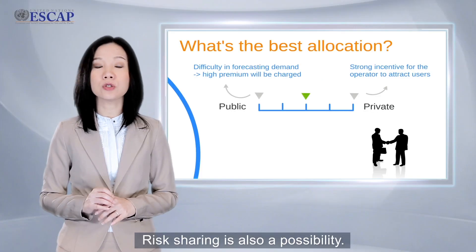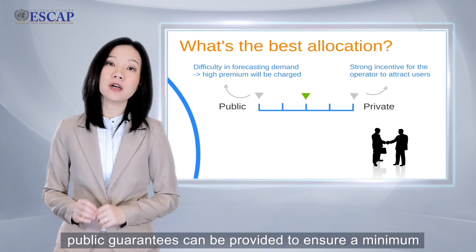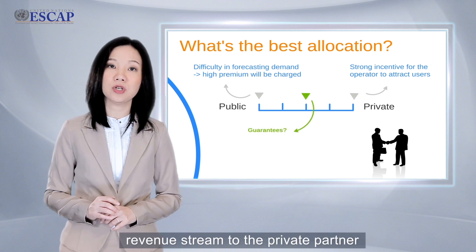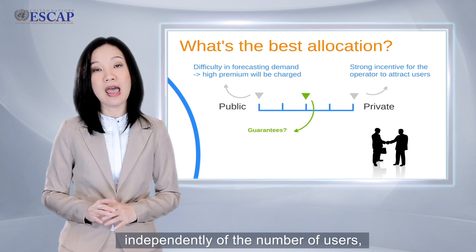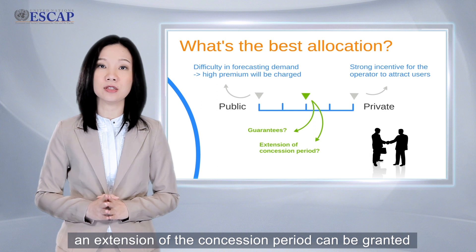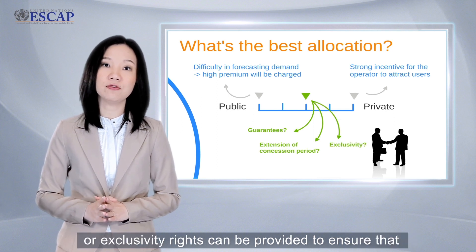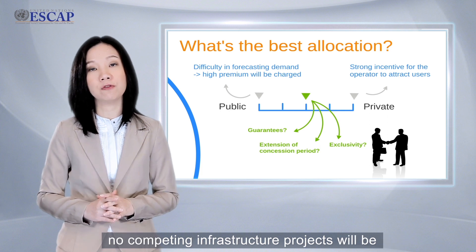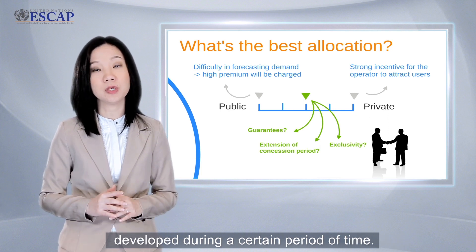Risk sharing is also a possibility. For example, public guarantees can be provided to ensure a minimum revenue stream to private partners independently of the number of users. An extension of the concession period can be granted to compensate for lower demand. Alternatively, exclusivity rights can be provided to ensure that no competing infrastructure projects will be developed during a certain period of time.